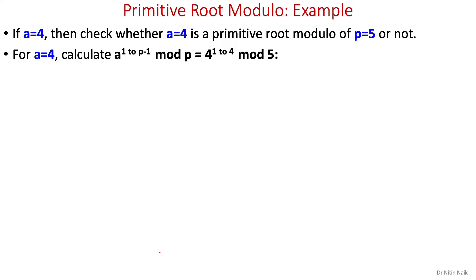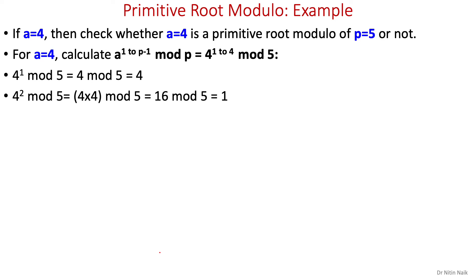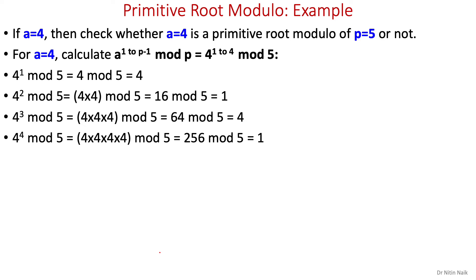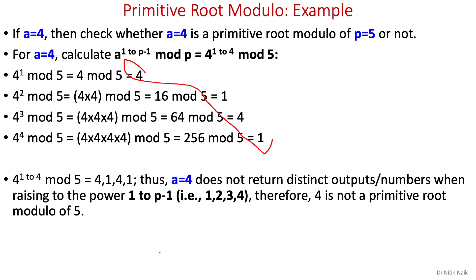Finally, check a equals 4: calculate 4 to the power 1 through 4 mod 5. 4¹ mod 5 = 4, 4² mod 5 = 1, 4³ mod 5 = 4, 4⁴ mod 5 = 1. The outputs are not all different — values repeat. Therefore 4 is not a primitive root modulo of 5. This is how we check all co-prime numbers one by one.